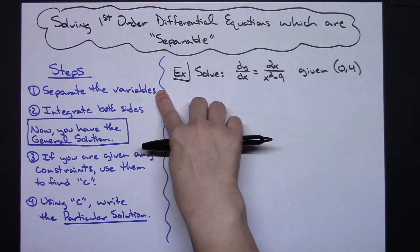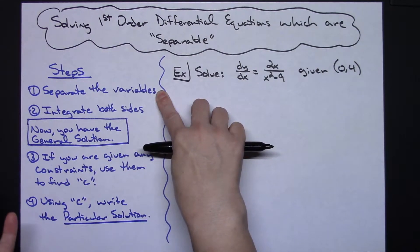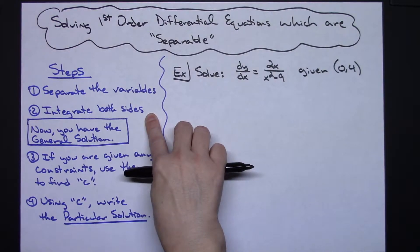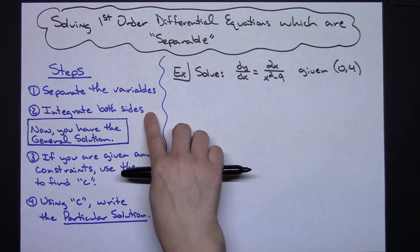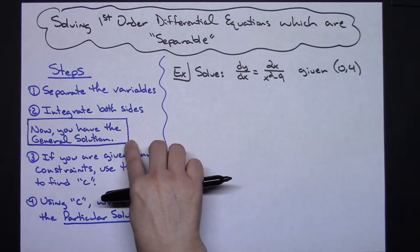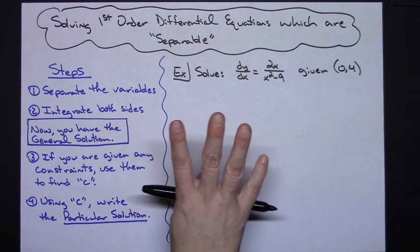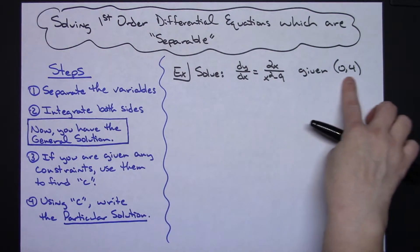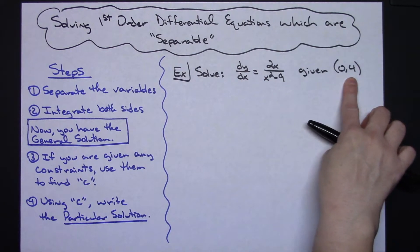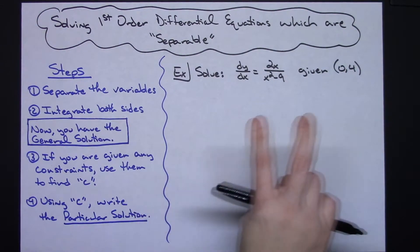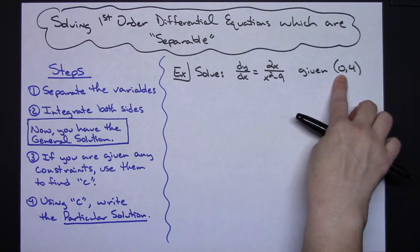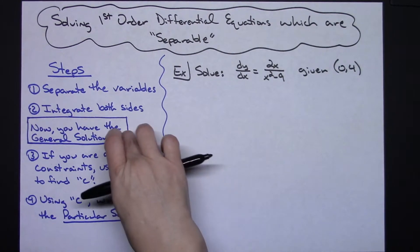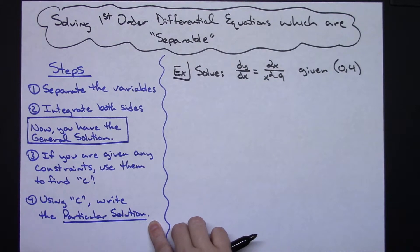Step one is to separate the variables — put all the y's on the left and all the x's on the right. Step two is to integrate both sides. Once you have completed the integration you will then have the general solution. If there were no constraints given then you would be done. However, if you are given constraints such as the ordered pair (0, 4), you plug 0 in for x and 4 in for y and then solve for c. Once you have the value of c you can write it into the general solution, which gives you a particular solution.